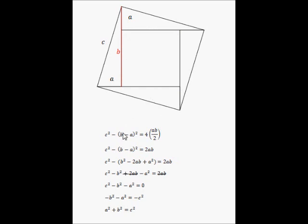So I've got c squared minus, in brackets, b minus a squared is equal to the area of the four right angle triangles. And each triangle is ab over 2. And the four of them is 4ab over 2.